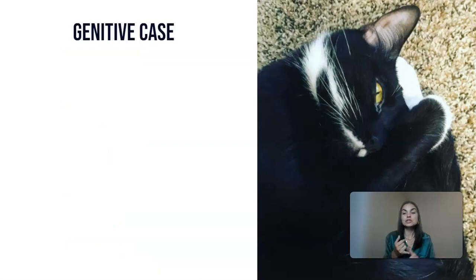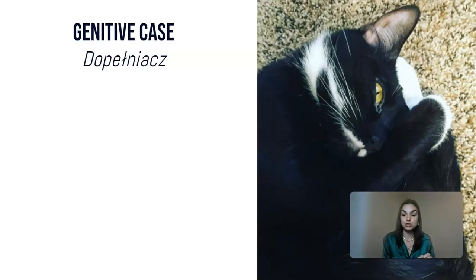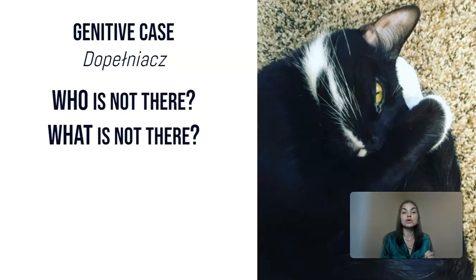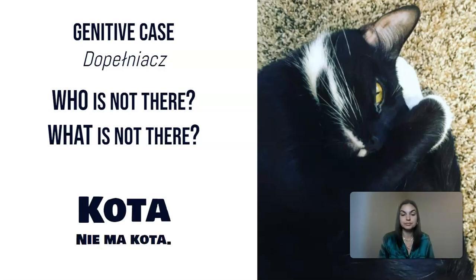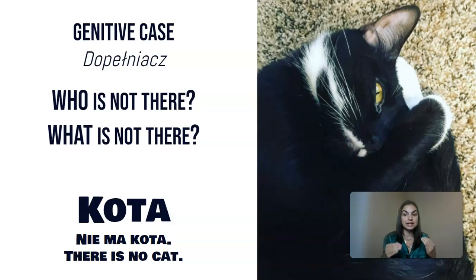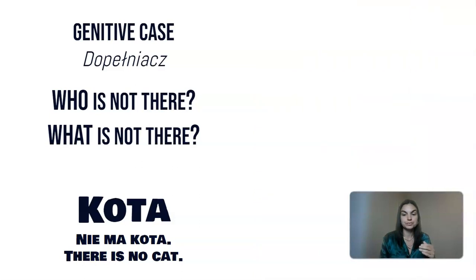Then there is the genitive case. The genitive case is known as the Dopełniacz, and it answers the question 'who is not there' or 'what is not there' — so in that negative form. It will look like this: Kota. Nie ma kota — there is no cat. In English you'll notice that 'cat' stays the same, but in Polish it will change.